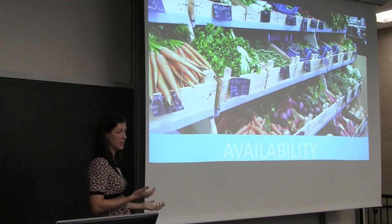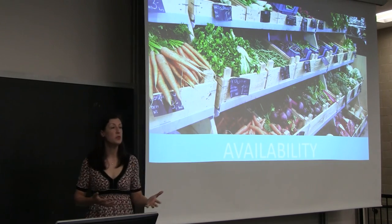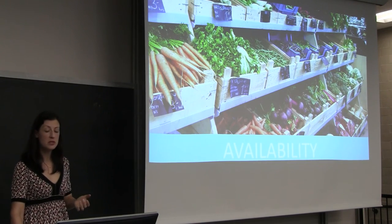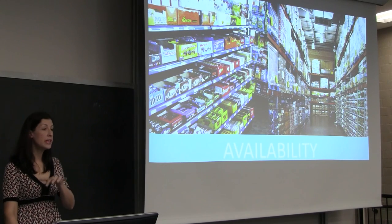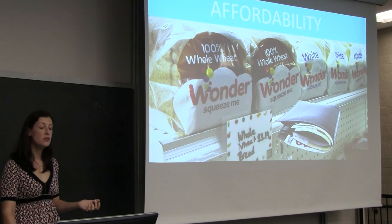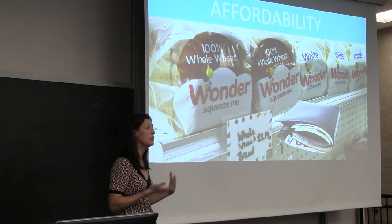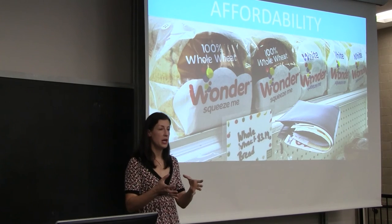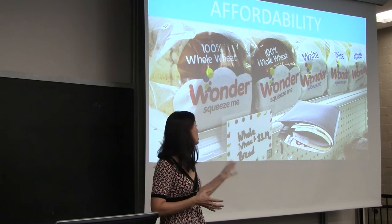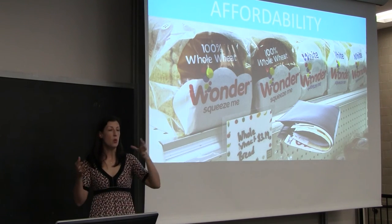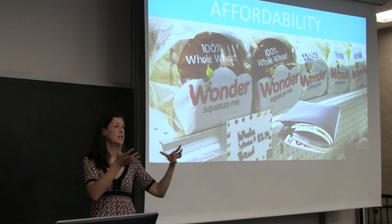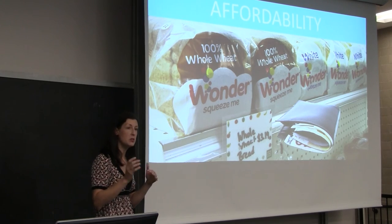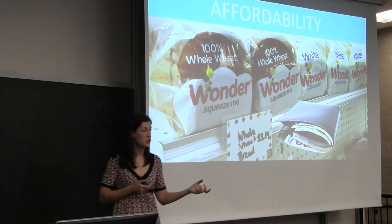Things like availability: once you get to the grocery store or convenience store, what kinds of foods are available? Is it beautiful boxes of fresh produce, or does it look more like a degraded selection? There's also affordability — not just whether I can afford to feed my family on a limited income, but what is the cost of certain products relative to healthier options? What is the cost of whole wheat bread relative to white bread, or low-sugar cereal relative to higher-sugar cereal?